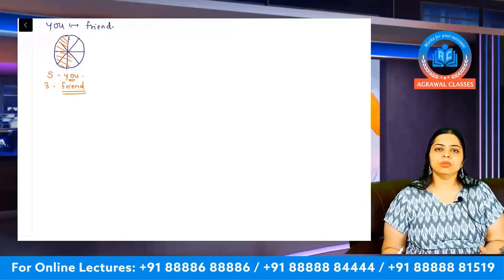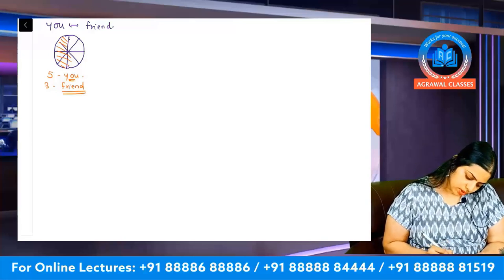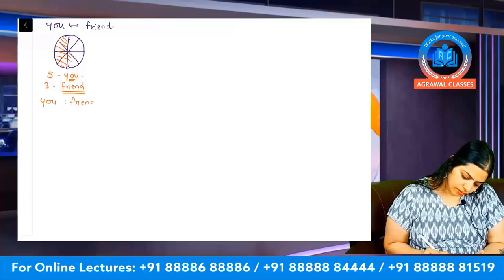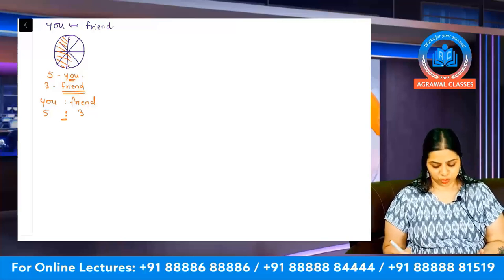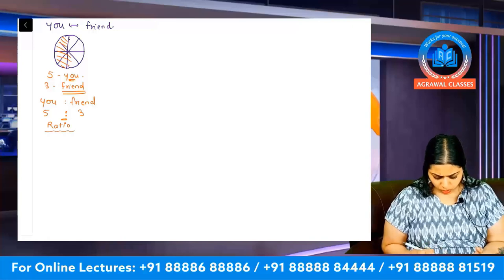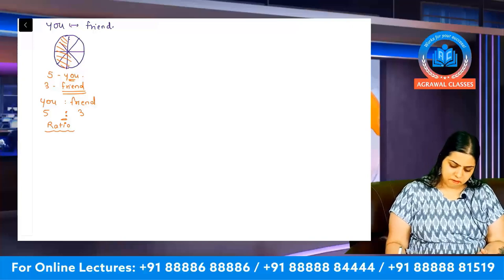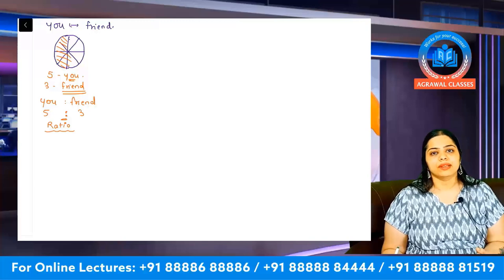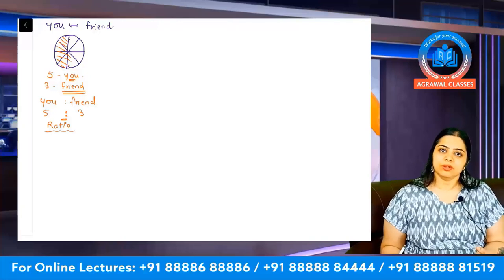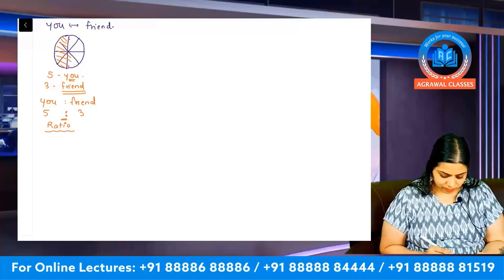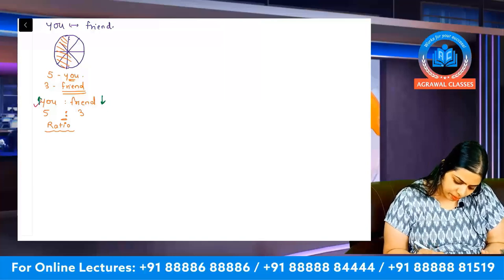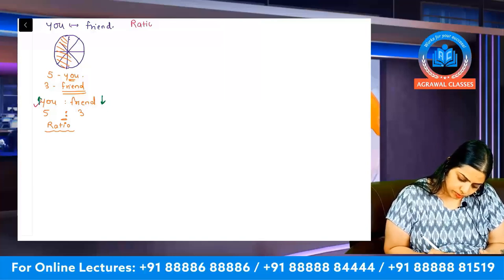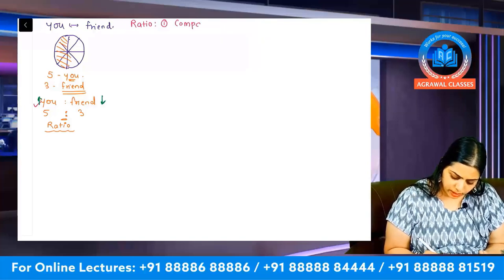You eat five pieces and your friend eats the remaining three. So how do we compare how much you ate versus how much your friend ate? You ate five and your friend ate three — we use the colon sign, which is the sign of ratio. This is read as 'five as to three.' The ratio helps you to compare quantities of different categories.